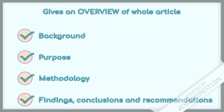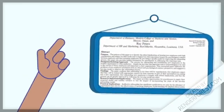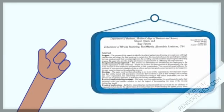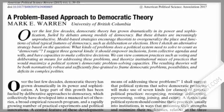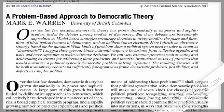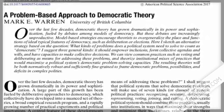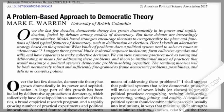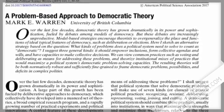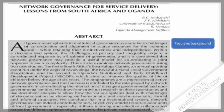Let's look at an example of an abstract. This abstract is divided into subsections and identifies the main points of the article. However, using subsections is fairly unusual and you will need to identify these elements yourself. There is no definite rule for the order in which information appears in the abstract, but it is generally written in the same order as the article.